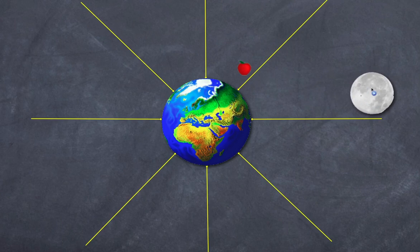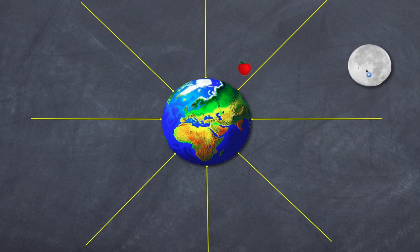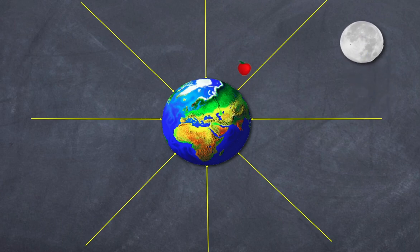Now why does the moon not fall into the earth? Well, actually it does, but because it's moving in a circular path it is constantly falling around in a circle — it's just not getting closer.